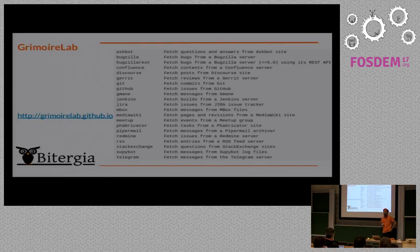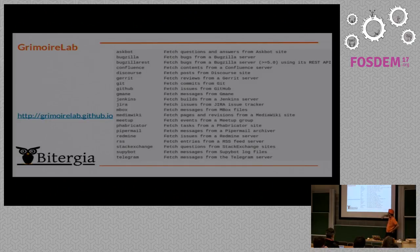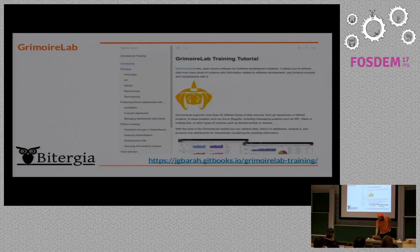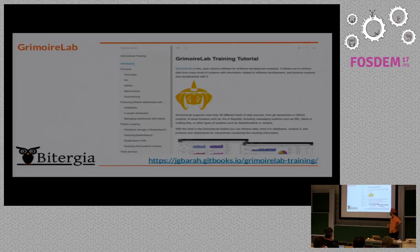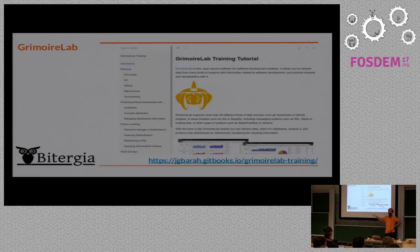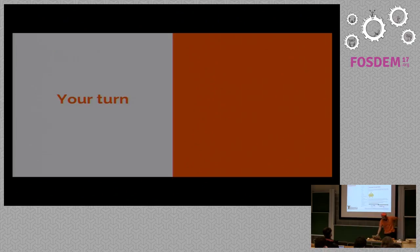This is the list of backends that Perceval and GrimoireElk support right now. You have things like Meetup, Fabricator, Phabricator, StackExchange, Zulip, Gmane, and many others. There's also a training guide as the main documentation source where you can get up to speed on Python scripting on top of this in maybe half an hour. It covers how to use Perceval to retrieve information and how to produce simple dashboards with a couple of commands — literally. All the tools are on PyPI so you can get started very easily.